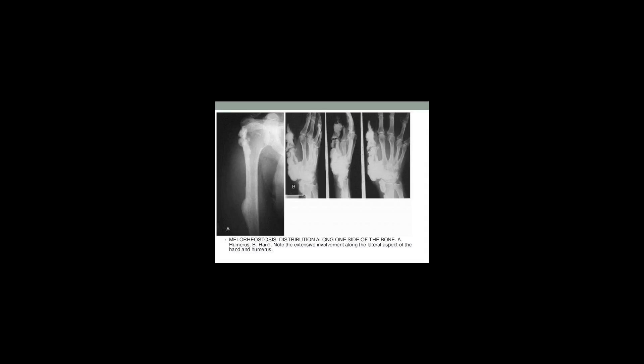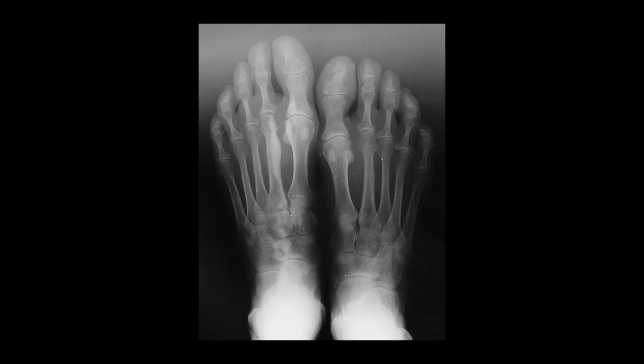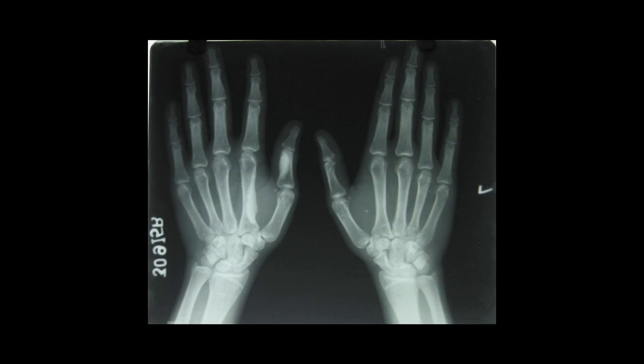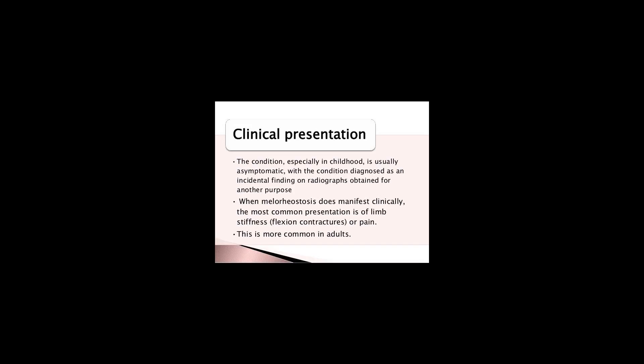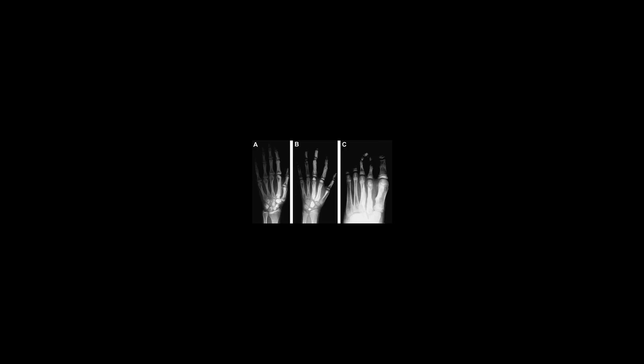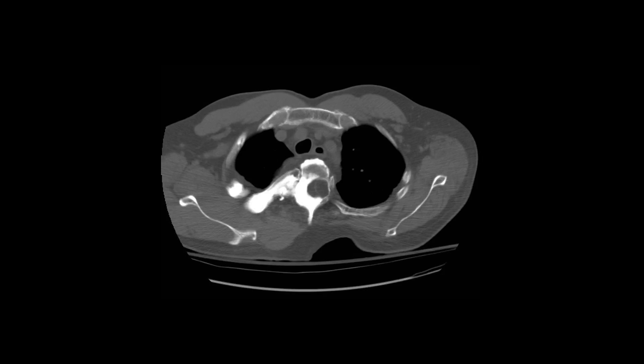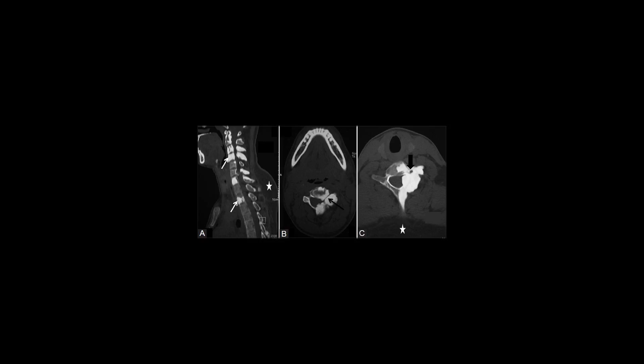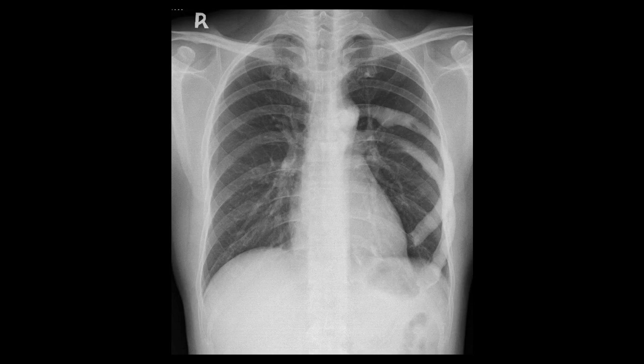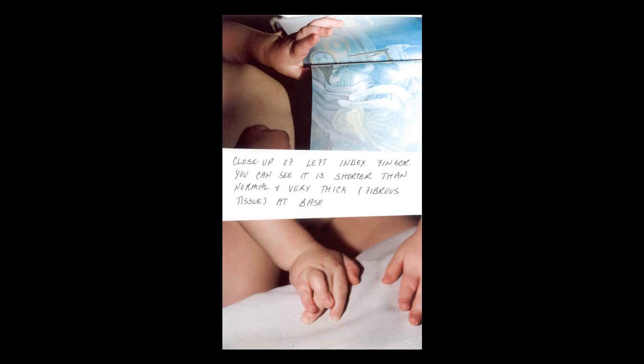Melorheostosis is a medical developmental disorder and mesenchymal dysplasia in which the bony cortex widens and becomes hyperdense in a sclerotomyal distribution. The condition begins in childhood and is characterized by thickening of the bones. Pain is a frequent symptom, and the bone can have the appearance of dripping candle wax.